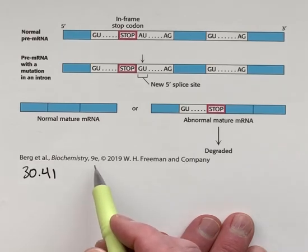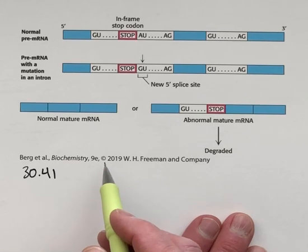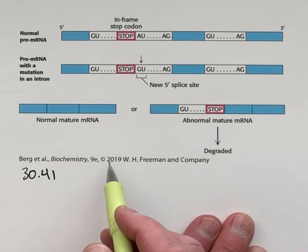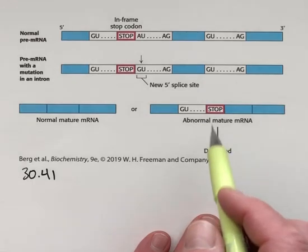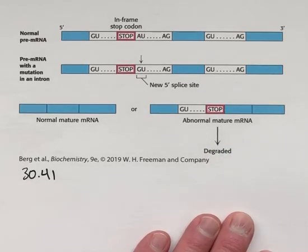And this is the cause of some certain forms of thalassemia. Insufficiency of hemoglobin is caused by abnormal splicing.